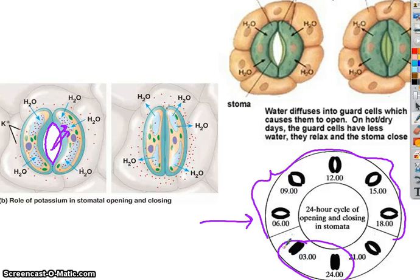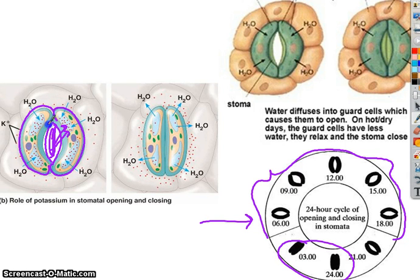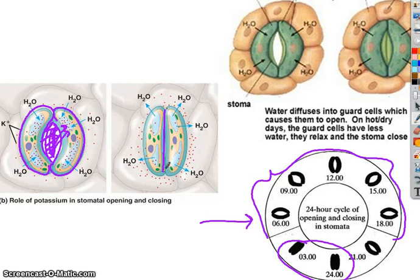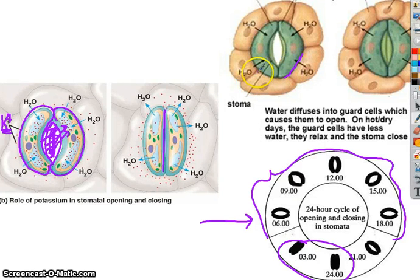What causes them to open and close? Basically, when water flows into the guard cells — there's your pore in the middle — they literally bow open, like when you blow up one of those long balloons that clowns make into animals. When they get full, they bow open; when water leaves, they collapse. This is controlled by potassium. Remember the sodium-potassium pump — potassium plays a role in water either flowing into the stomata or flowing out. When the guard cells are full, they're open; when water leaves, they're closed.